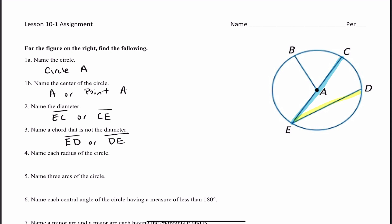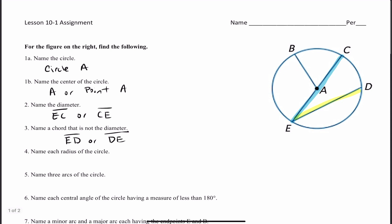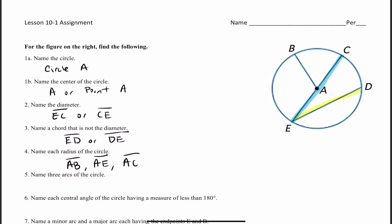Number 4: name each radius of the circle. The radius goes from the center to the circle. Segment AB is an example of a radius. Segment AE is another example. And segment AC is our last example. These are examples of radii — radii is plural for radius. Also keep in mind: the radius is always half the size of the diameter.